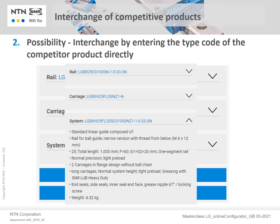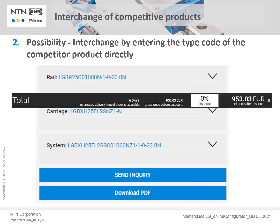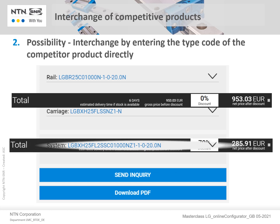At the same time, the gross price and the expected delivery time are displayed in the footers. If you know your purchase discount, it can be entered to reveal the corresponding net price. If no discount is known, the net price for the selected product can be requested by email by clicking on Send Inquiry.